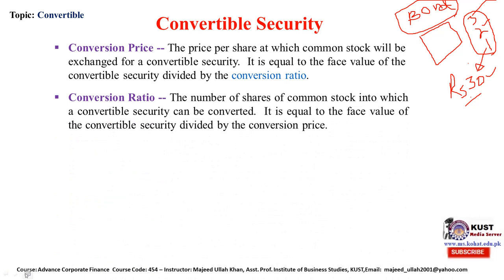The conversion ratio is the number of shares of stock into which the convertible security can be converted. It is expressed as a number of shares — it may be one, two, or three — finalized with the investor at the time of issuance. It can also be calculated as the face value of the convertible security divided by the conversion price, depending on which term is specified in the issuance agreement.